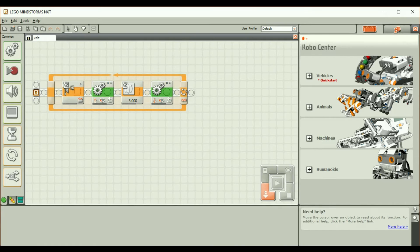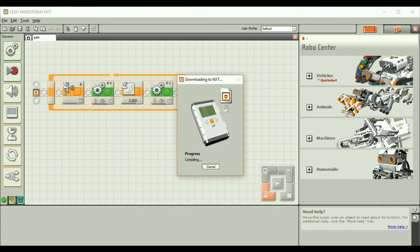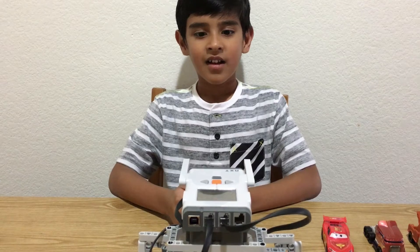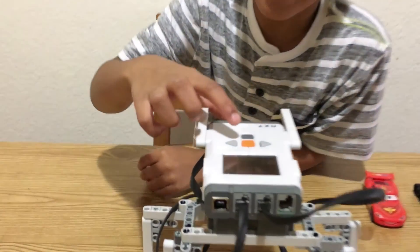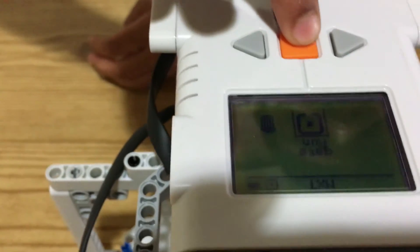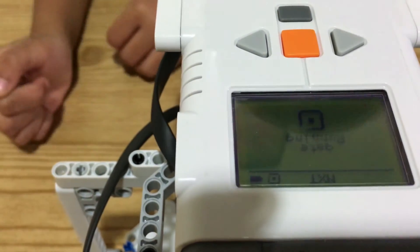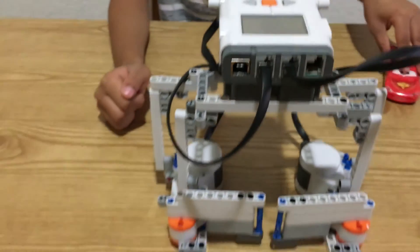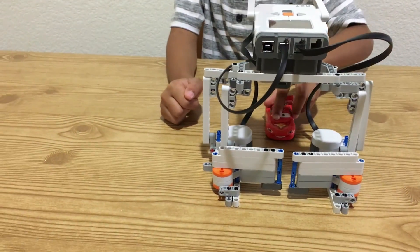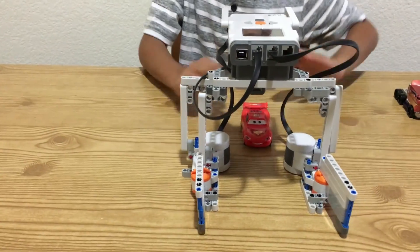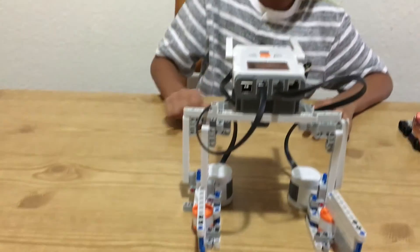So now let's download our program and test our automatic gate. Okay, now let's test our program. Let's push the start button. Now let's start the test run. Now Lightning McQueen comes, the gate opens and he goes through, and